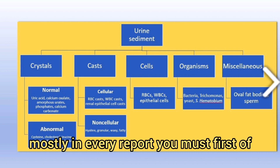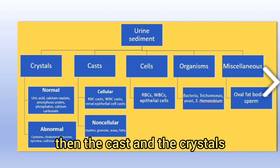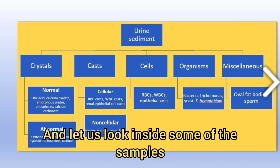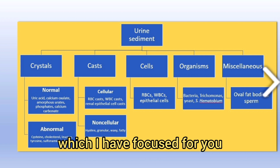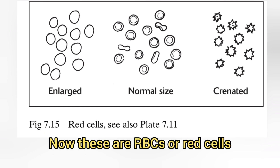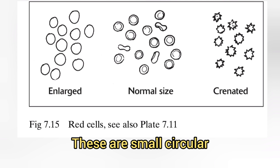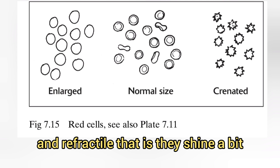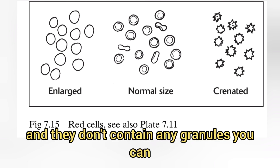In every report, you must first report the cells, then the casts, and then the crystals. Let's look inside some of the samples. These are our RBCs or red cells — they are small, circular, and refractile, meaning they shine a bit, and they don't contain any granules.